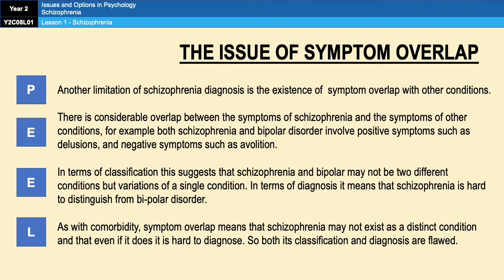Symptom overlap is very similar to comorbidity. It refers to the occurrence of symptoms of schizophrenia that are also symptoms of another condition. For example, both schizophrenia and bipolar disorder involve positive symptoms such as delusions and negative symptoms such as avolition. In terms of classification, this suggests that schizophrenia and bipolar may not be two different conditions but could be variations of a single condition. For diagnosis, it means schizophrenia is hard to distinguish from bipolar disorder. As with comorbidity, symptom overlap means schizophrenia may not exist as a distinct condition, and even if it does, it is very hard to diagnose using current procedures — suggesting both classification and diagnosis are flawed.